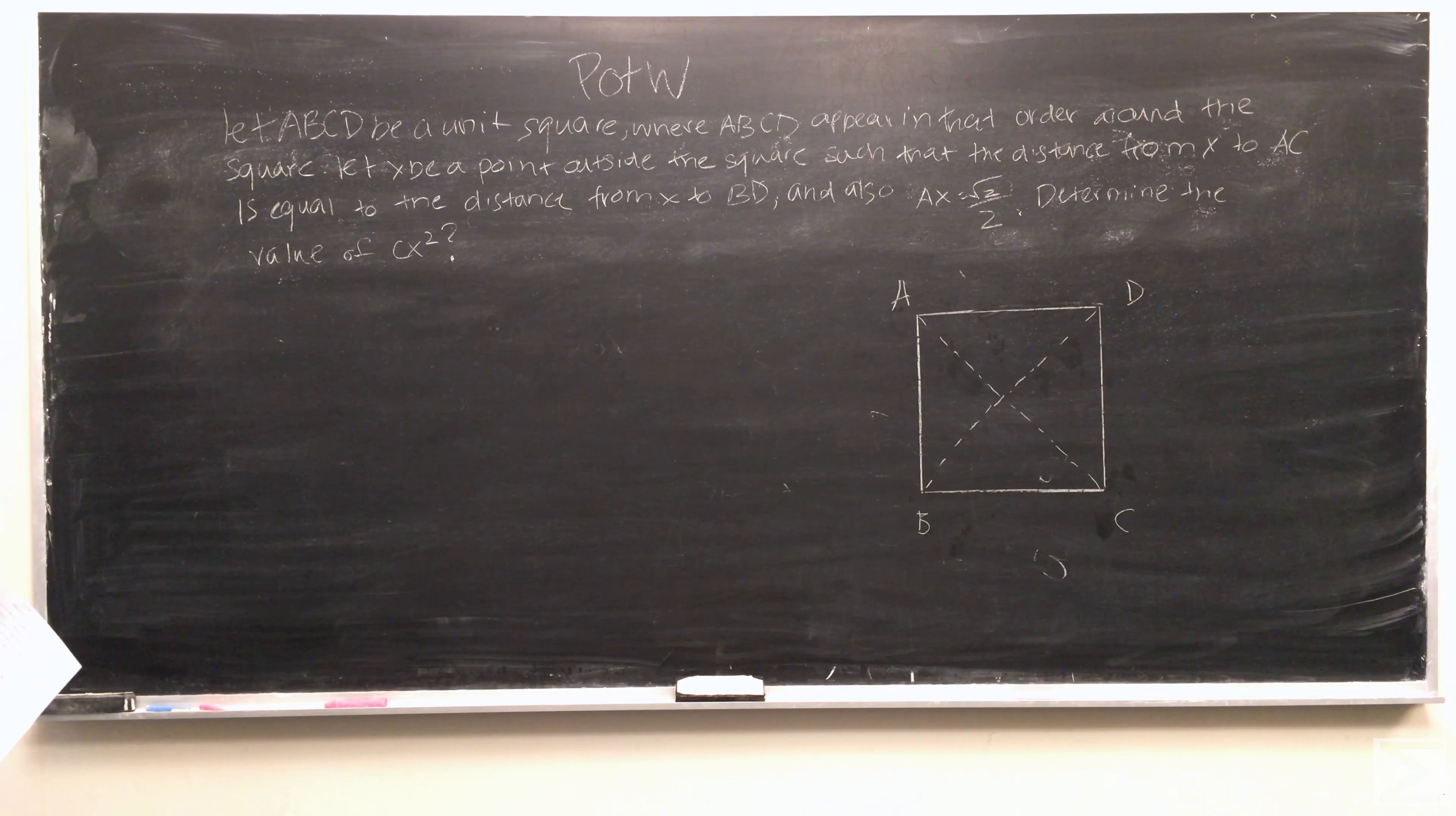Where a, b, c, d appears in that order around the square. Let x be a point outside the square such that the distance from x to ac is equal to the distance from x to bd, and also ax is equal to the square root of 2 over 2. Determine the value of cx squared.